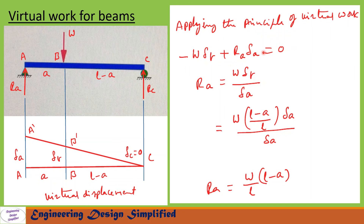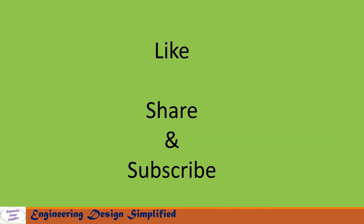From this equation we can write Ra equals W times delta_b divided by delta_a. We have seen that delta_b equals delta_a times (L minus a) over L. After substituting and simplifying, we get the reaction at A: Ra equals W times (L minus a) over L. That's all for today's video — if you like this content, please like, share, and subscribe. Thanks for watching.